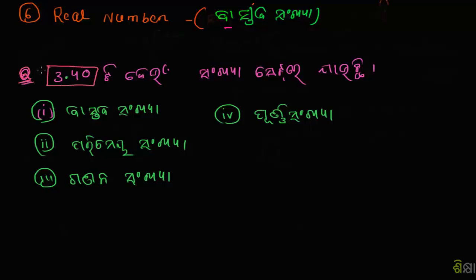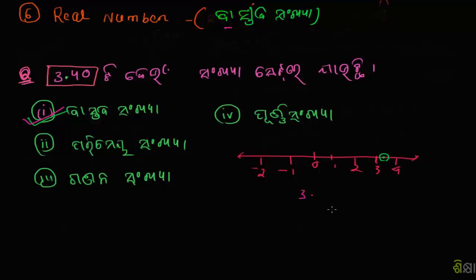Sankhya set and number line — with decimals like 0.3, 0.4, and 3.40. What is real? 7.0, 5.0, 3.40.